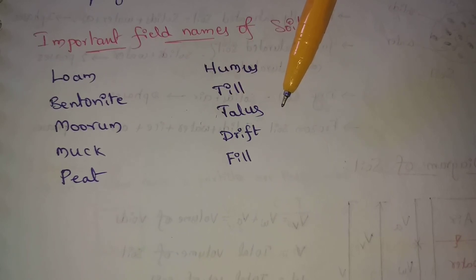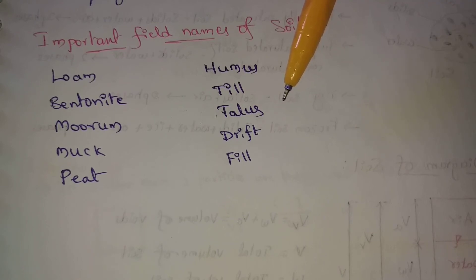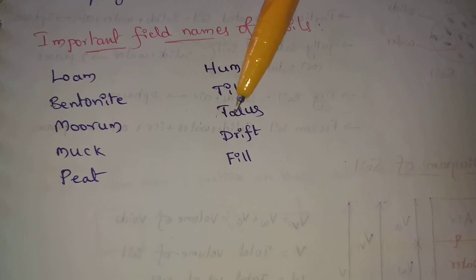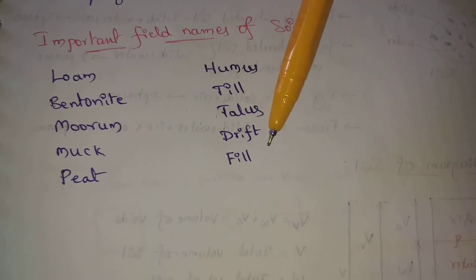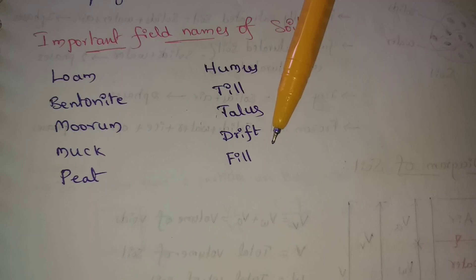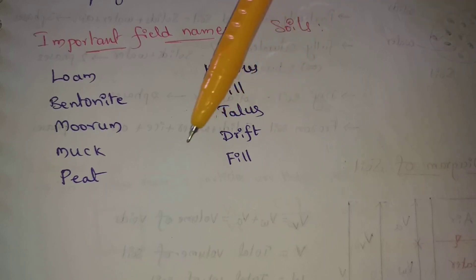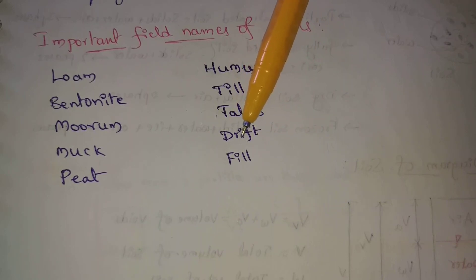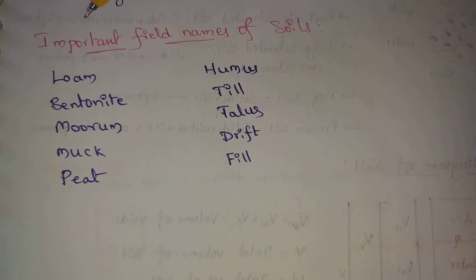Next, drift. Drift refers to soil deposited by glaciers. Next one, fill. Fill is a man-made deposit of soils.